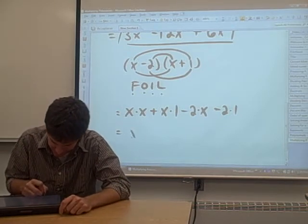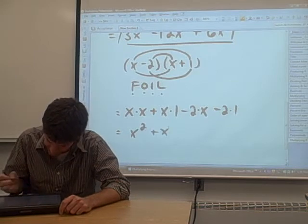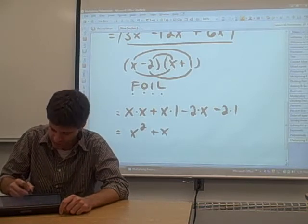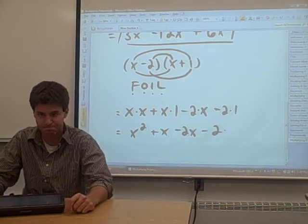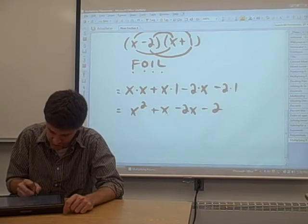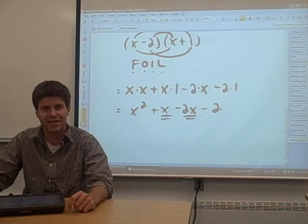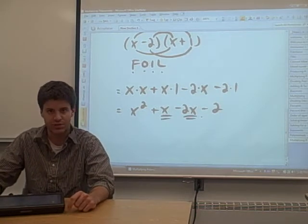So, x times x is just x squared. x times 1, of course, is just x. Negative 2 times x is negative 2x. And negative 2 times 1 is just negative 2. And it looks like we have some like terms. We have two terms that have just an x to the first power. So, we're going to combine those.